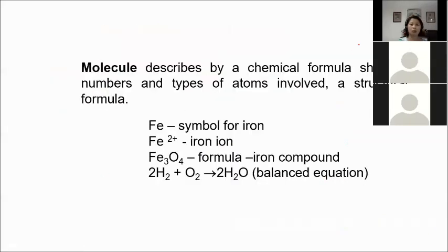Let's familiarize ourselves with some notation. A molecule described by a chemical formula shows the numbers and types of atoms — for example, Fe is the symbol for iron. Fe²⁺ or Fe³⁺ is an iron ion, meaning a charged iron atom. Fe₃O₄ is the formula of a compound. 2H₂ + O₂ → 2H₂O is a balanced equation.